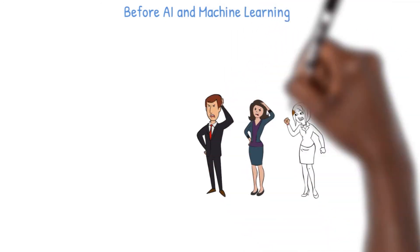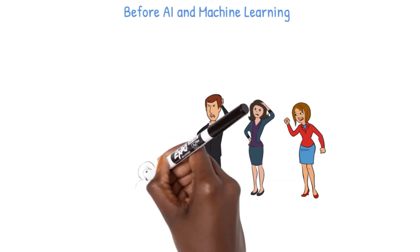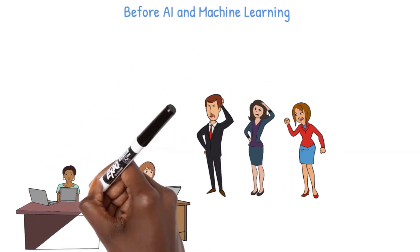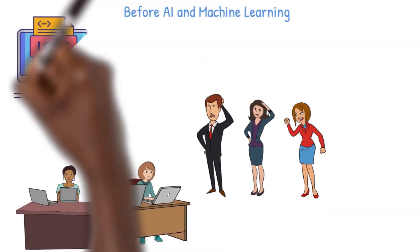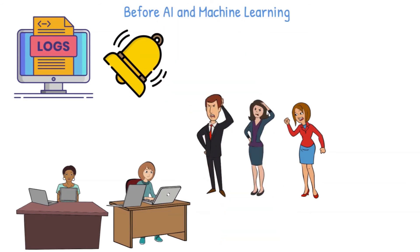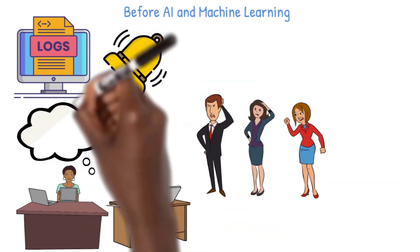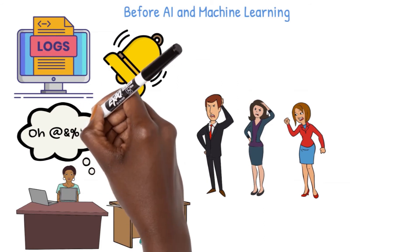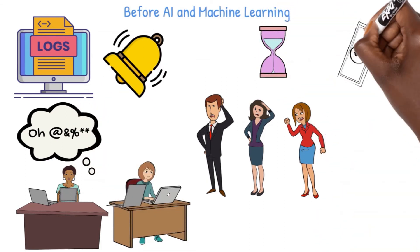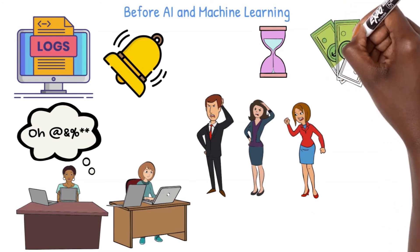Without AI ML, users raise trouble tickets when they face network issues, and network engineers use multiple tools to troubleshoot. They look at logs and alarms, which can be very noisy and are reactive. This is a very frustrating experience that is repeated every single time, resulting in a loss of time and money for the business.